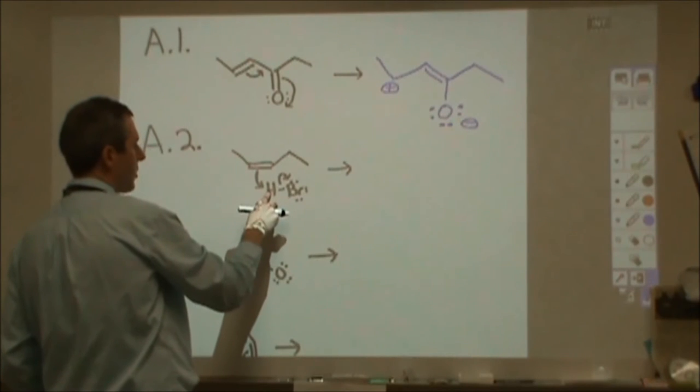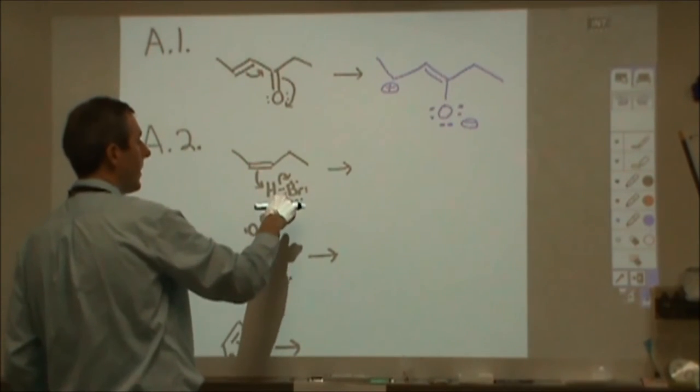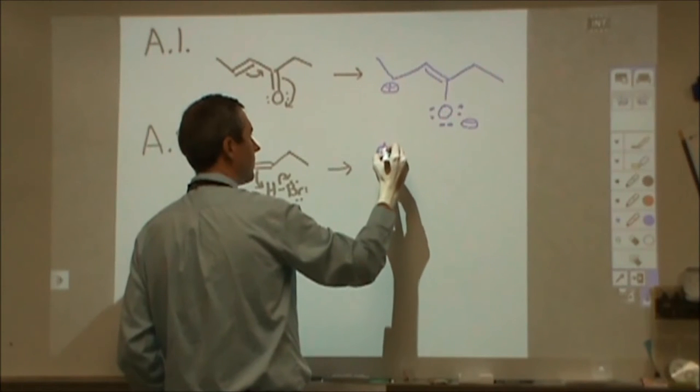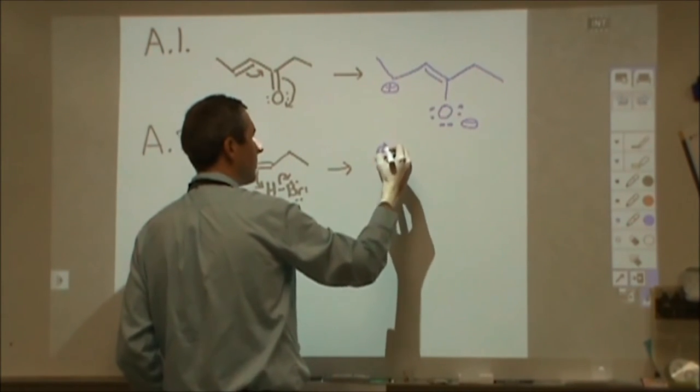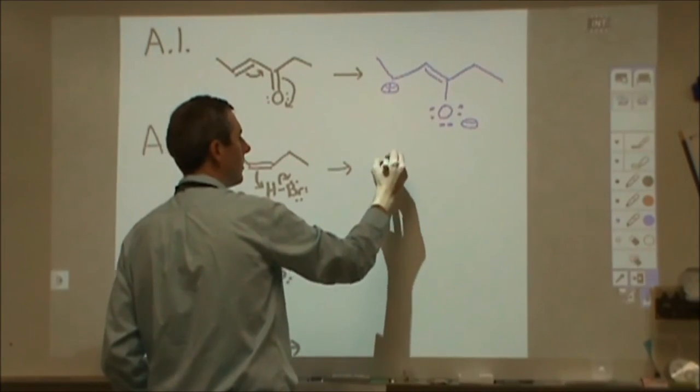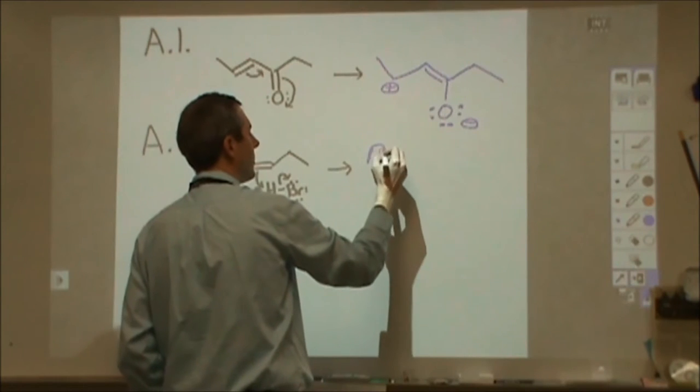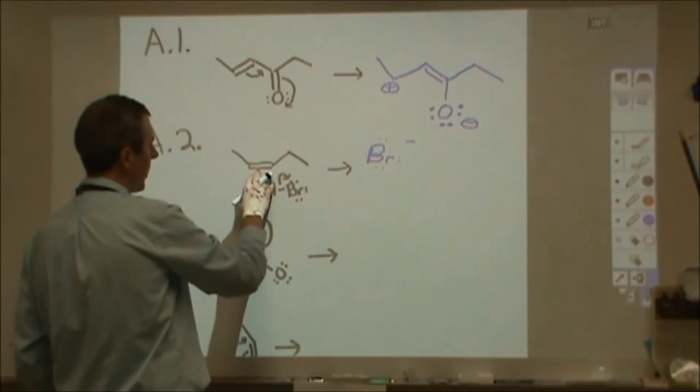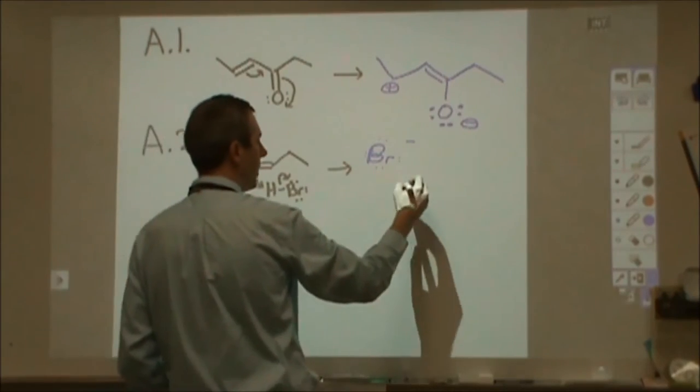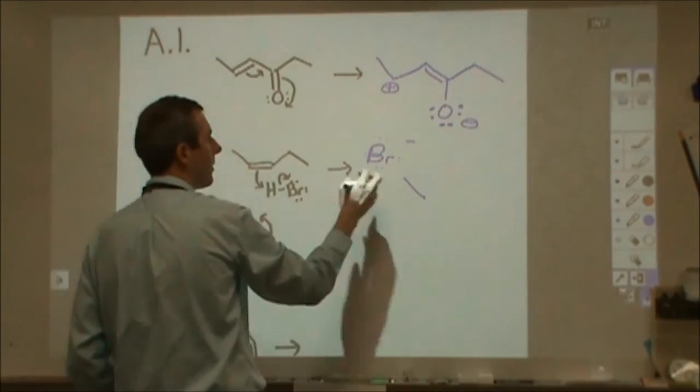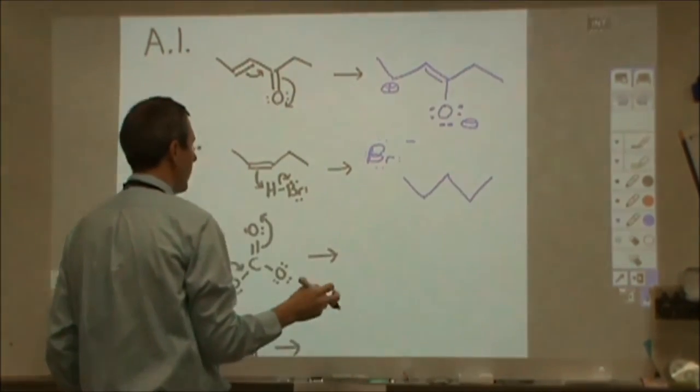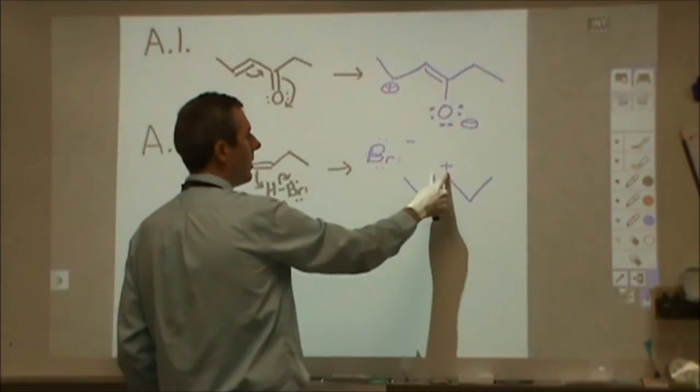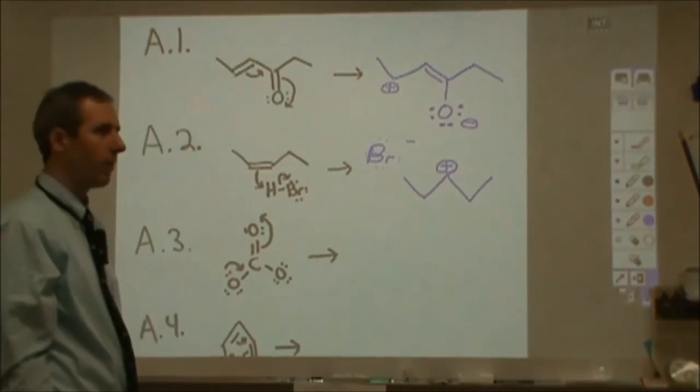For A2, what we're going to have formed is the H+ here is going to link to one of these two carbons from that pi bonding interaction, and the bromide is going to retain its electrons like that. Now the H+ can go to this carbon or this carbon. Either way, we're going to form five carbons. We're either going to have a positive charge here or here, depending on where the hydrogen goes. I'm going to assume the hydrogen goes here, leaving me with a positive charge there, and those will be the two products.